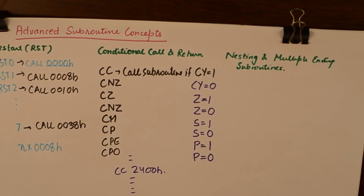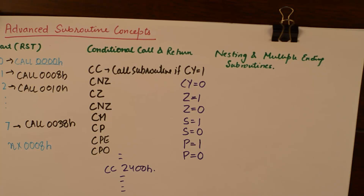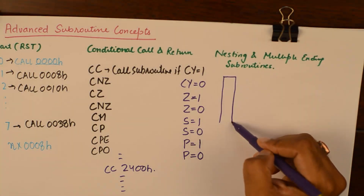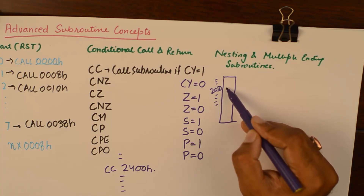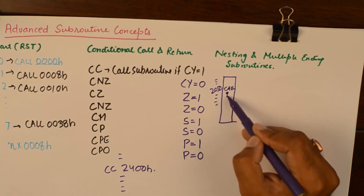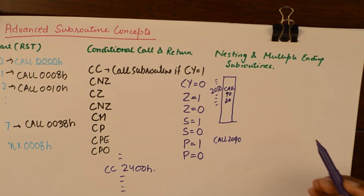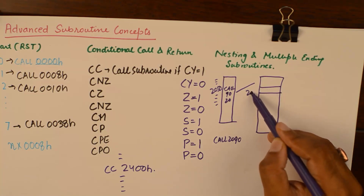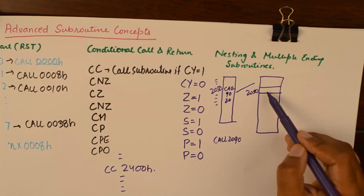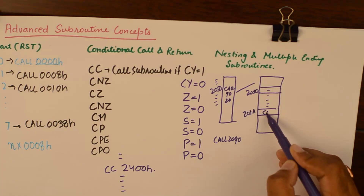Finally, I want to discuss nesting and multiple ending subroutines. Nesting of subroutines means branching from a main program — say the main program is written here and at address 2050 you encounter a call instruction: call 2090. Your microprocessor will take you to location 2090 and start the subroutine.